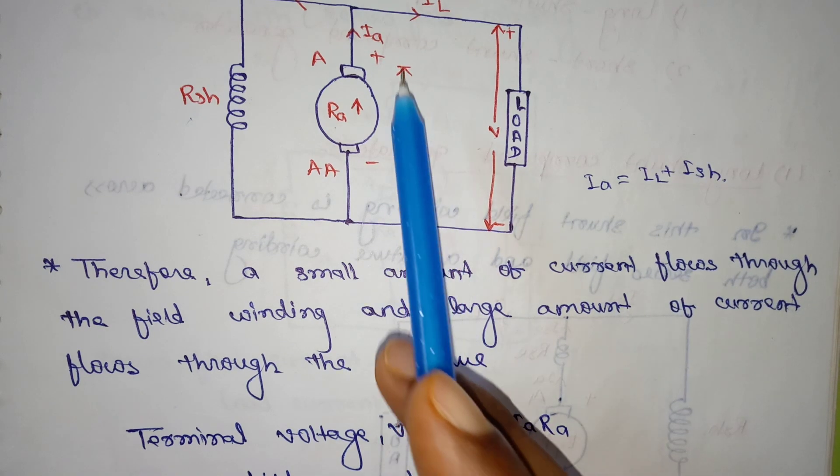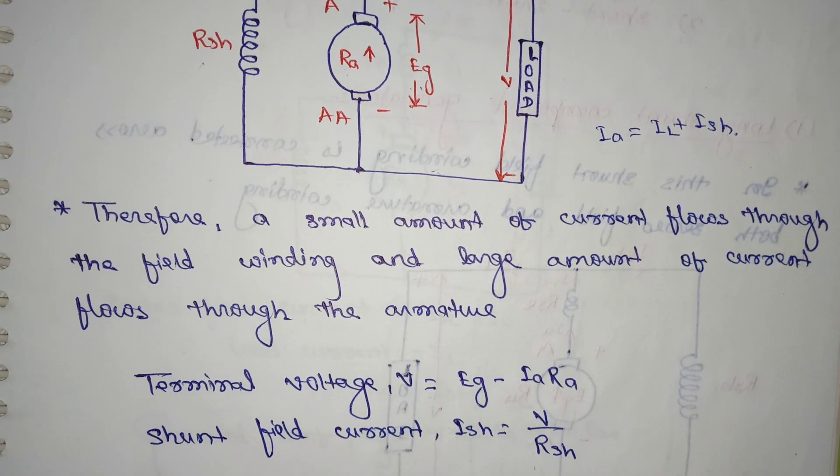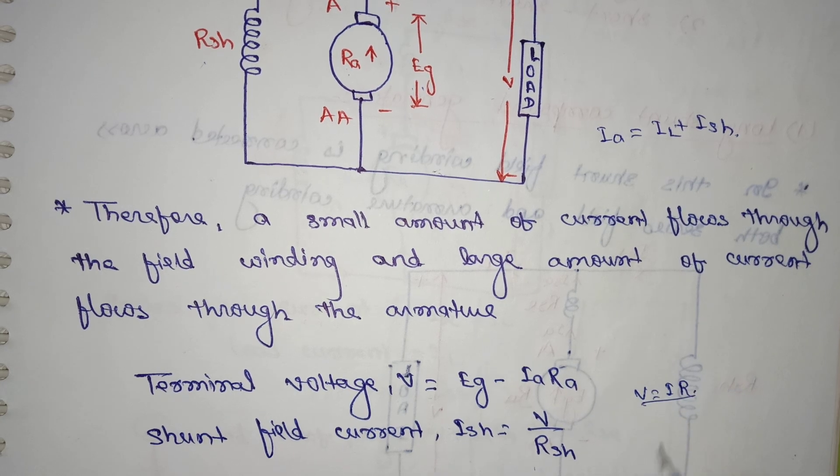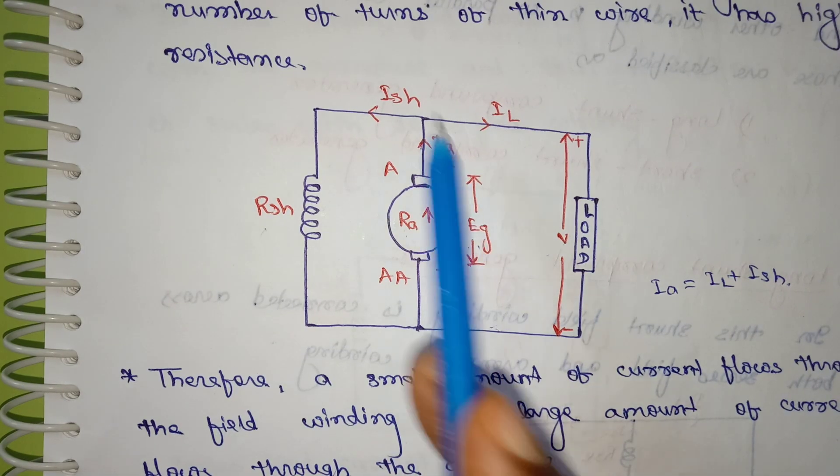Next, for the field current, we use Ohm's law. We have to find the shunt current.